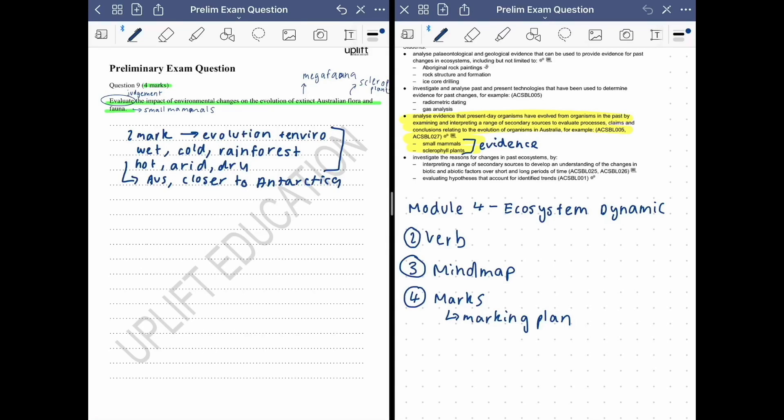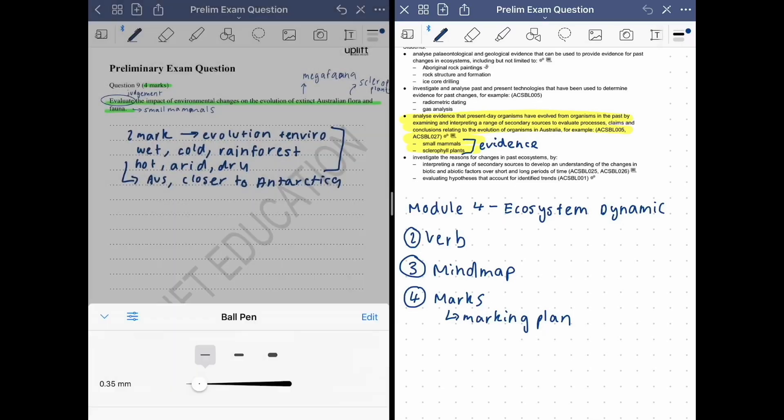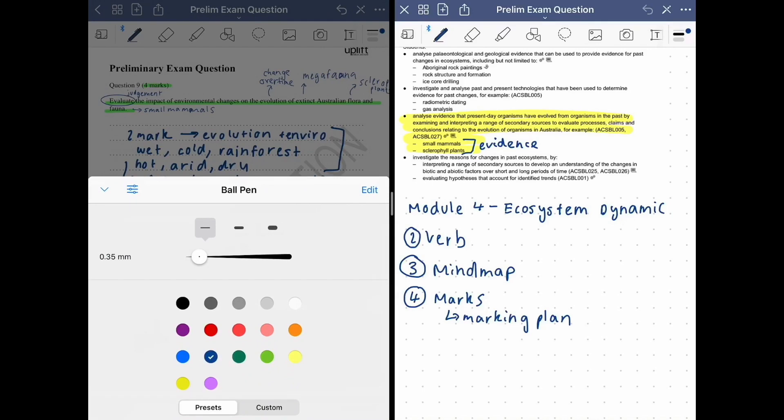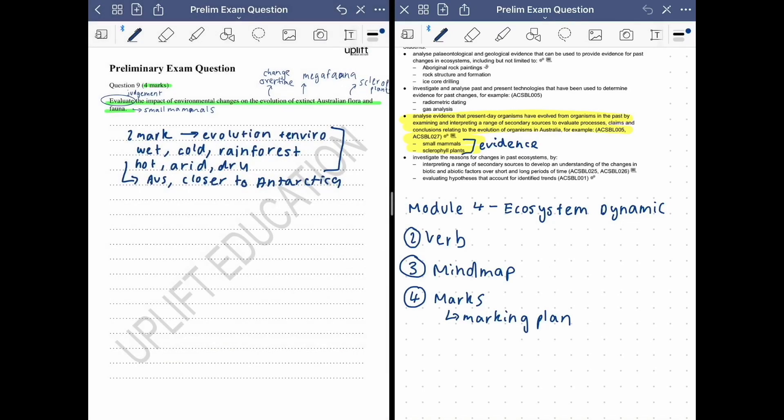So that's the reason as to why the climate changed. So we need to tie this reason into the evolution. Well evolution is basically the change of species over time. So different characteristics that evolve due to selection pressures, environmental change, etc. So specifically we're looking at the sclerophyll plants and small mammals which evolved from our mega fauna.